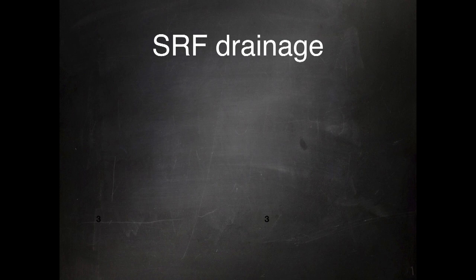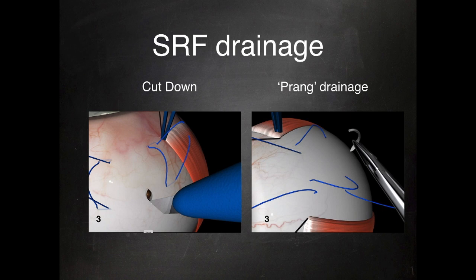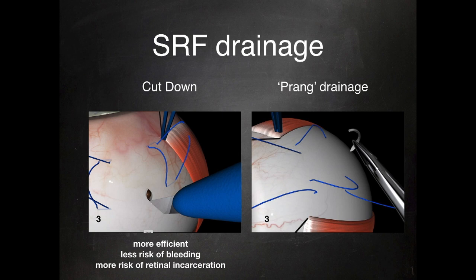There are two main techniques for subretinal fluid drainage. One is a cut down, the other is a puncture. In the cut down, the sclera is cut down until the choroid is exposed, and then the choroid is penetrated with diathermy or laser. In the puncture technique, the sclera and the choroid are penetrated with a needle, so the entry in the choroid is small. The cut down technique is more efficient, with less risk of bleeding because the choroid is prepared, but there is a higher risk of incarceration because the hole in the choroid is large.